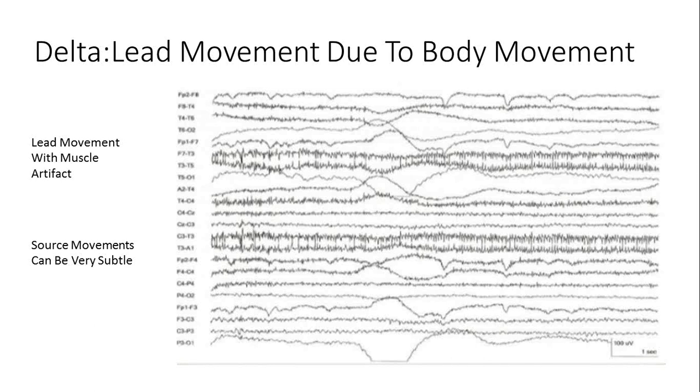Here's lead movement due to body movement. You can see those big swings. What's happening is the leads might be swinging as they move, or if it's a cap, it might be jiggling the main lead coming off the back. One of the things you can do with single leads is braid them a little bit, and that helps reduce the induction of voltage into them.